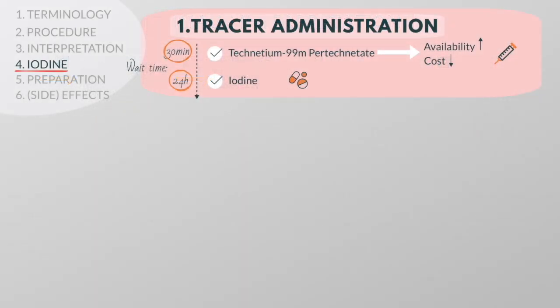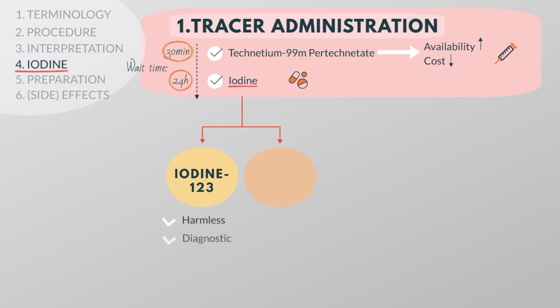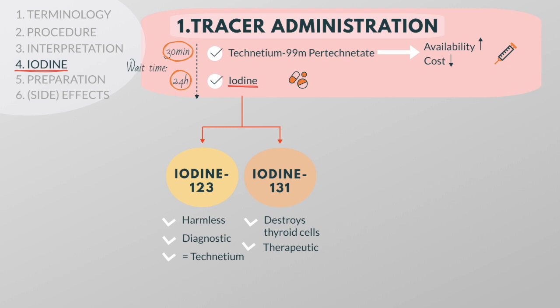It is important to note that the tracer iodine is made in two radioactive forms. Iodine-123 is harmless to thyroid cells and is used to visualize the thyroid gland — it is a good alternative to technetium. The second form is iodine-131, which destroys thyroid cells and is used to treat thyroid cancer and Graves' disease.